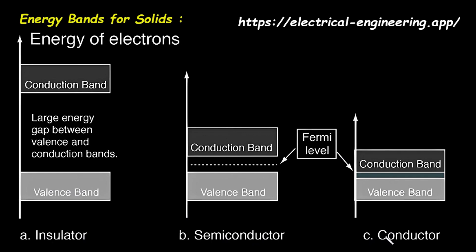The vertical axis in each of these diagrams represents the energy of electrons. As we move up the axis, the energy level increases. To understand these diagrams, we first need to understand two key ideas: the valence band and the conduction band.